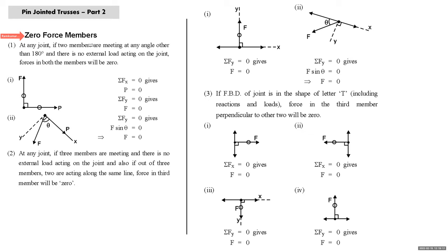We have to understand the fundamentals of zero force members. Some conclusions will be drawn based on method of joints. At any joint, if two members are meeting at any angle other than 180 degrees and there is no external load at the joint, force in both the members will be zero. Here two members P and F are meeting at 90 degrees. If you write sigma Fx = 0, P will be zero; sigma Fy = 0, F will be zero.